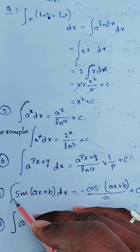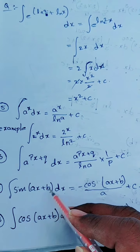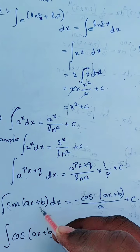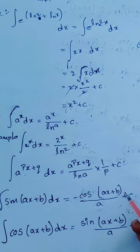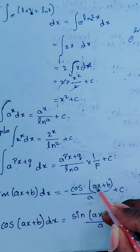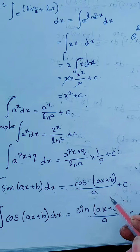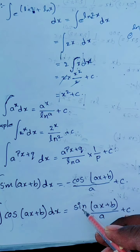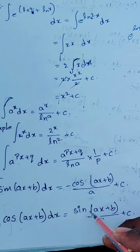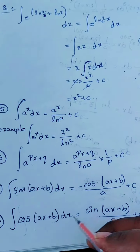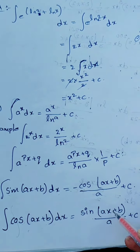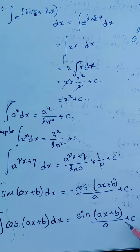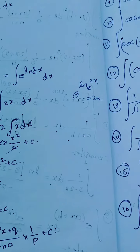Similarly, integration of sin ax plus b dx gives minus cos ax plus b divided by a, plus c. And integration of cos ax plus b dx gives sin ax plus b divided by a, plus c. So in this way we apply the formulas everywhere.